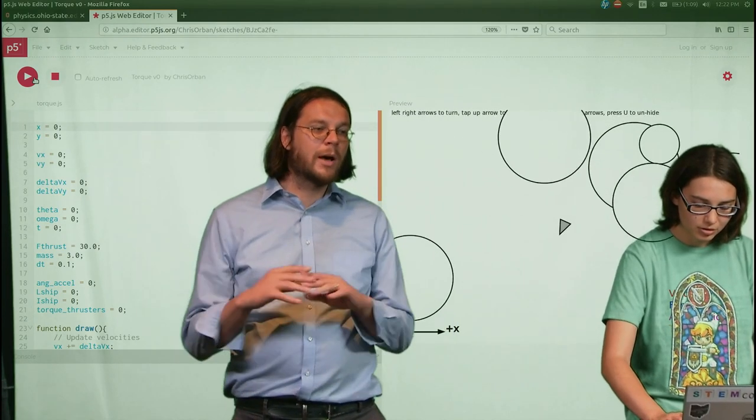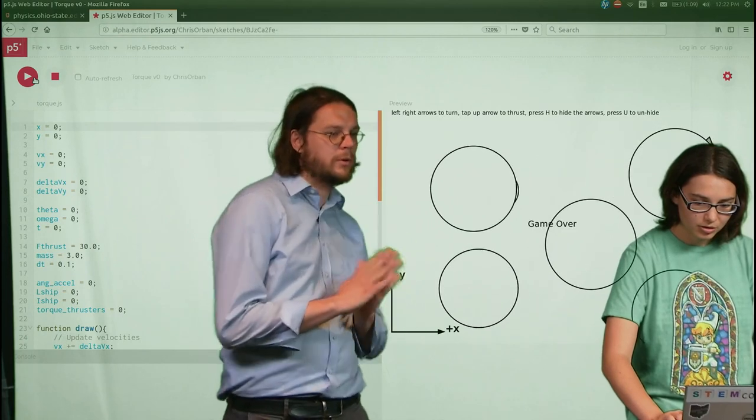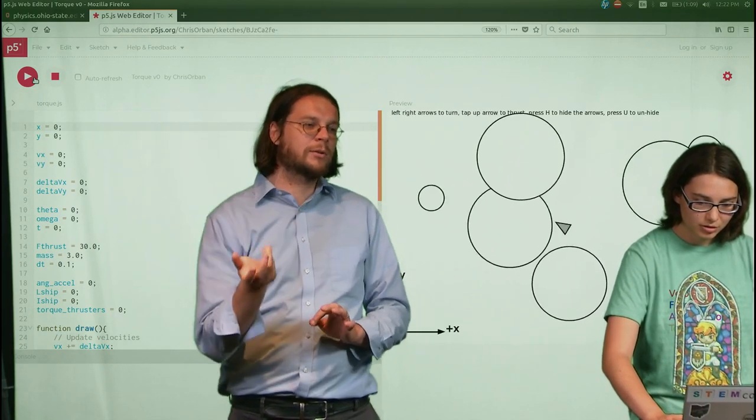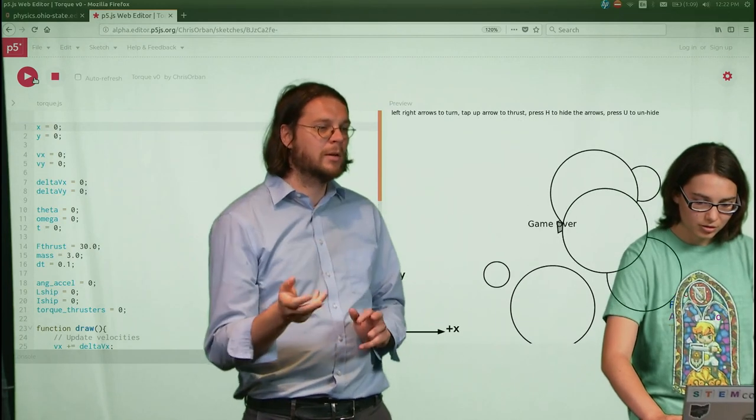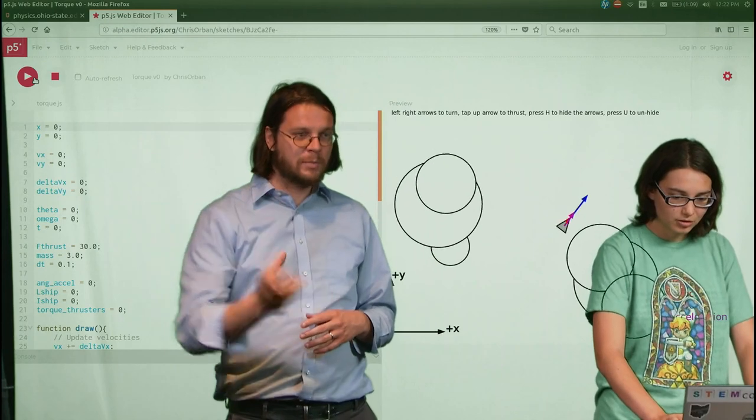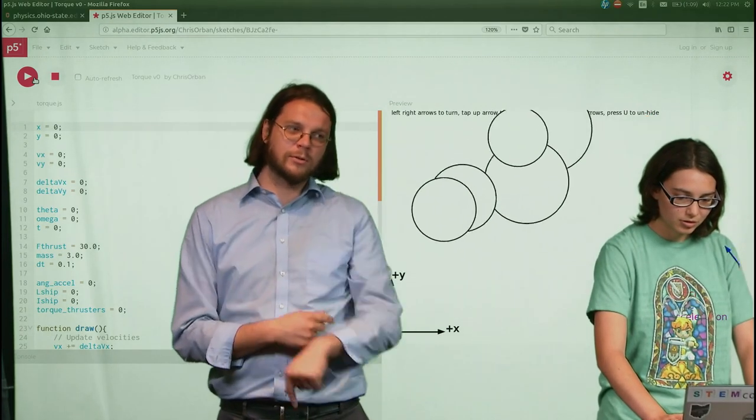Now what we're gonna do is modify this so that instead of just changing the direction of the ship with the arrow keys, you're gonna fire thrusters that make it spin. Because in the real world, in space, if something starts spinning, it's gonna keep spinning until you fire the thrusters to do something different.